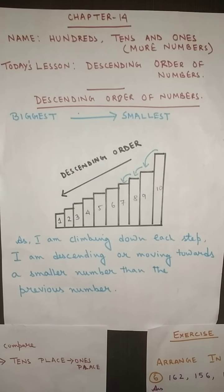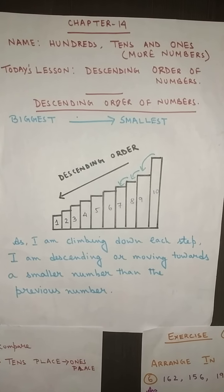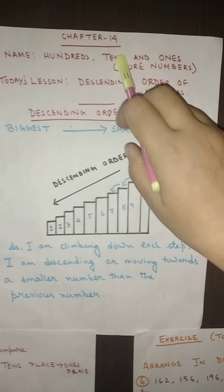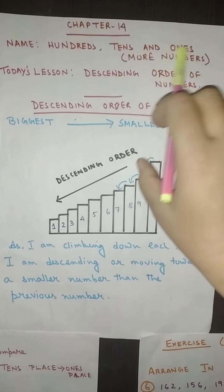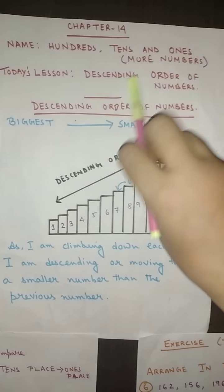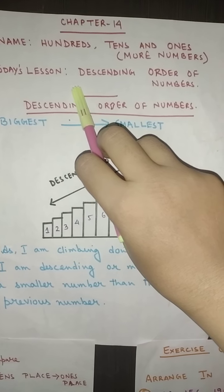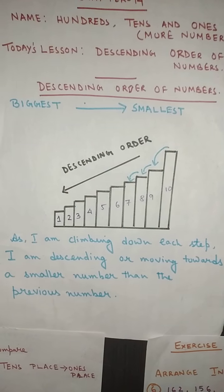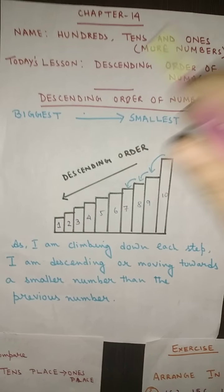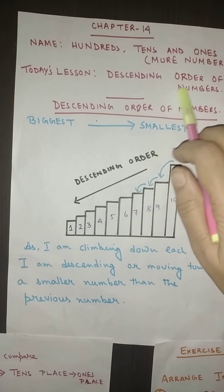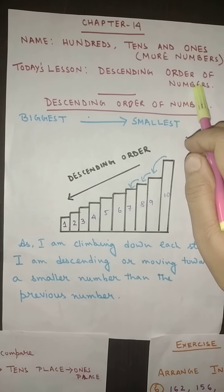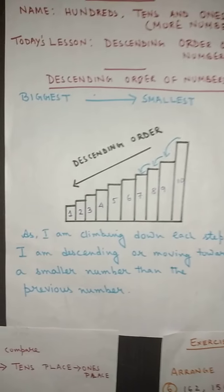Namashiva students, with Amma's Grace we are all well. We are doing chapter number 14, and the name of the chapter is 'Hundreds, Tens and Ones of Moon Numbers.' Last day we had already done the ascending order of numbers, and we had started with the descending order of numbers. Today also we will be continuing with the same thing, that is the descending order of numbers.